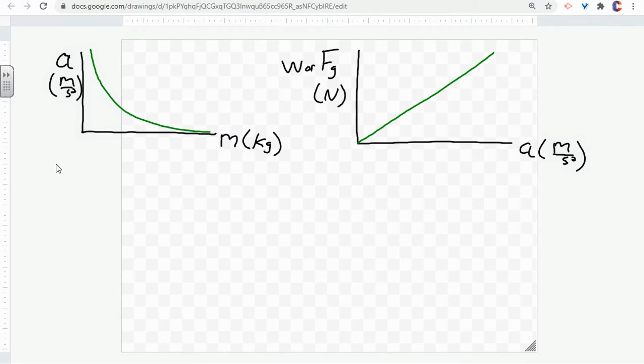So for the graph that's not linear, we're going to graph acceleration, and it tells us that we need to do the inverse of our mass. So we're going to do inverse mass, which gives us units of inverse kilograms, and that is going to produce a straight line graph.